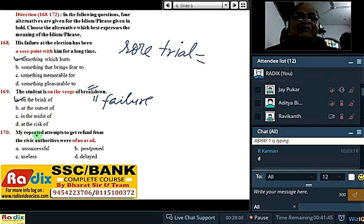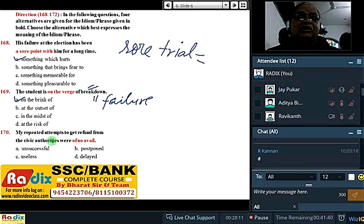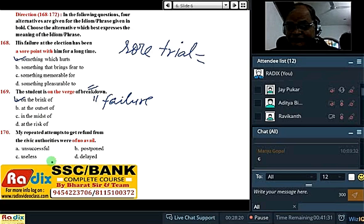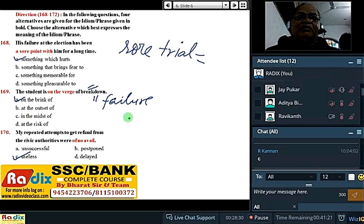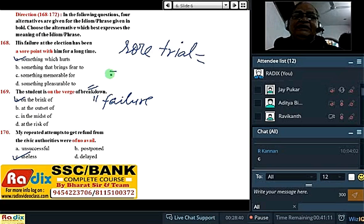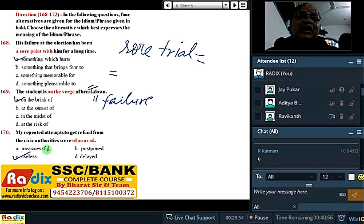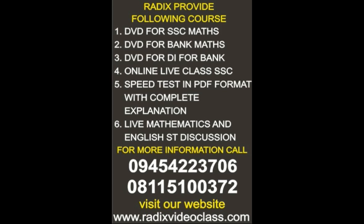My repeated attempts to get a refund from the civic authorities were of no avail — that is, of no use, all failure. Answer is 'useless'. Of no avail ki basic meaning: of no utility. Vocabulary without relevant examples would be of no avail. 'Unsuccessful' galti se na lagana — unsuccessful is spoken of a person, whereas here we are talking about things — fund refunding and all that.